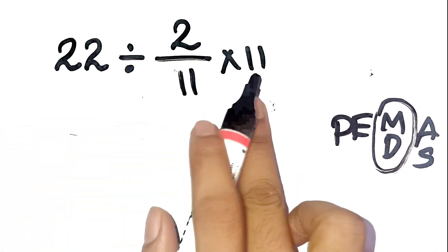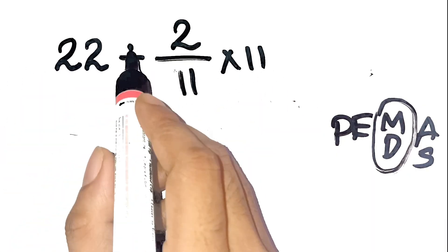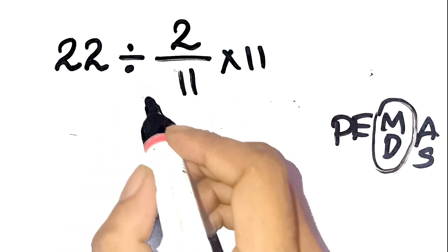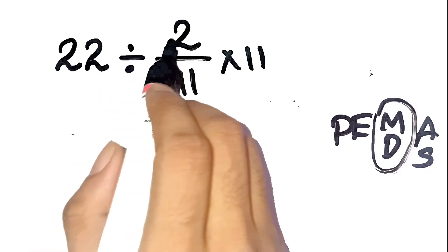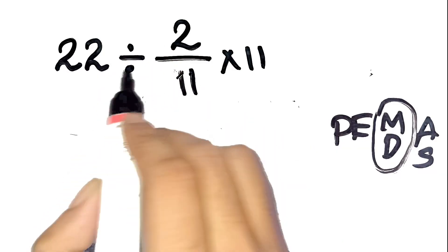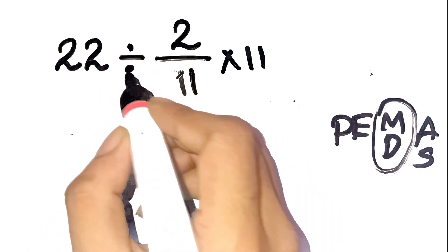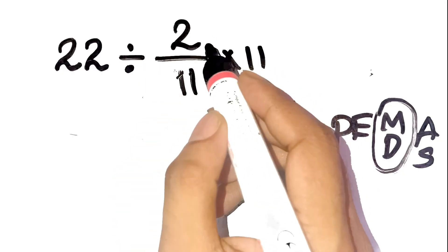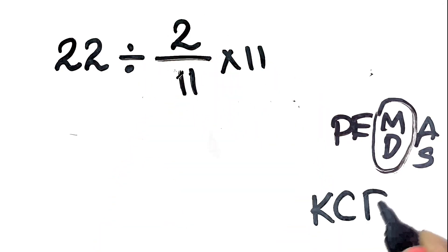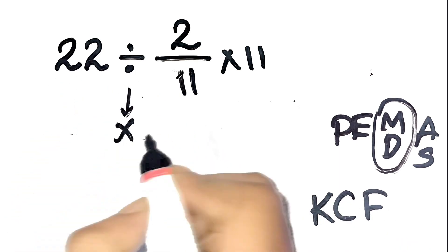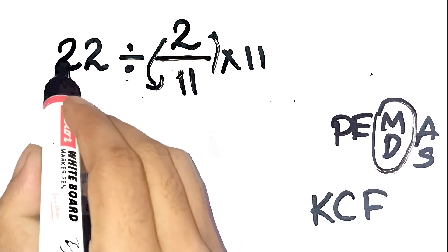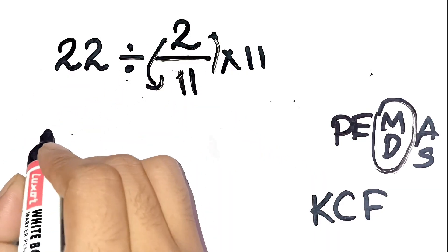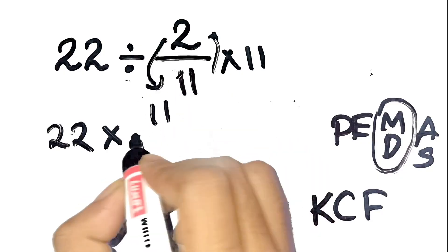So let's apply that carefully. We start from the left: 22 divided by 2 over 11, multiplied by 11. The first operation we see is 22 divided by 2 over 11. And here's the catch — dividing by a fraction is the same as multiplying by its reciprocal. That's the KCF rule: keep, change, flip. Keep the first number, change the division to multiplication, and flip the second fraction. So 22 divided by 2 over 11 becomes 22 times 11 over 2.